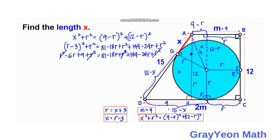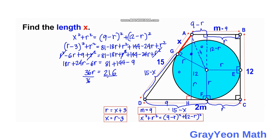After cancelling the R² terms, we move the R terms to the left: 18R + 24R − 6R = 81 + 144 − 9. This gives 36R = 216. Dividing both sides by 36, R = 6 units.